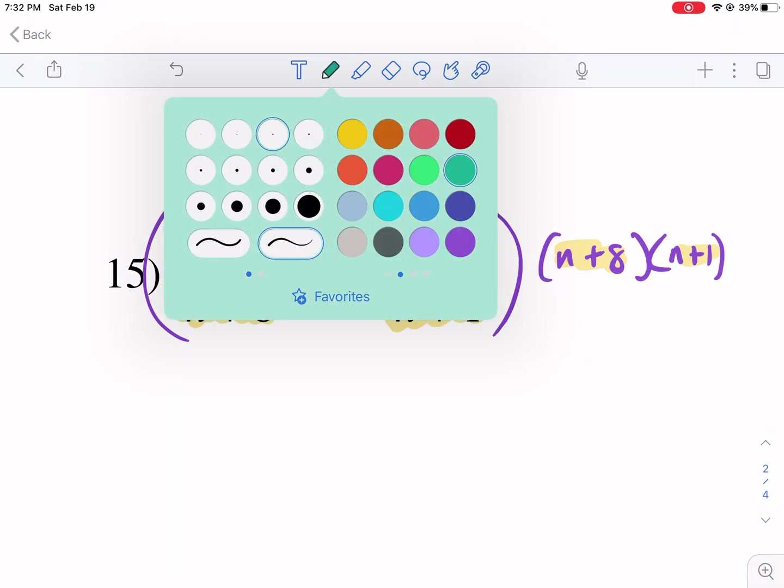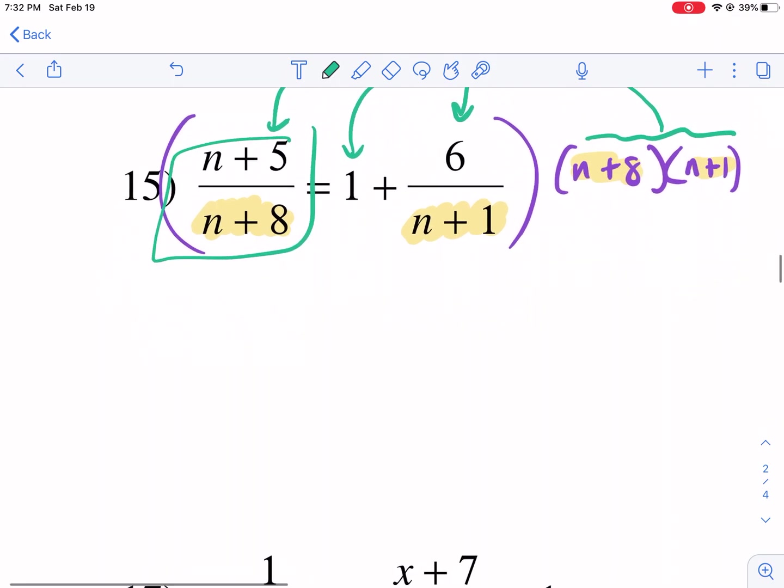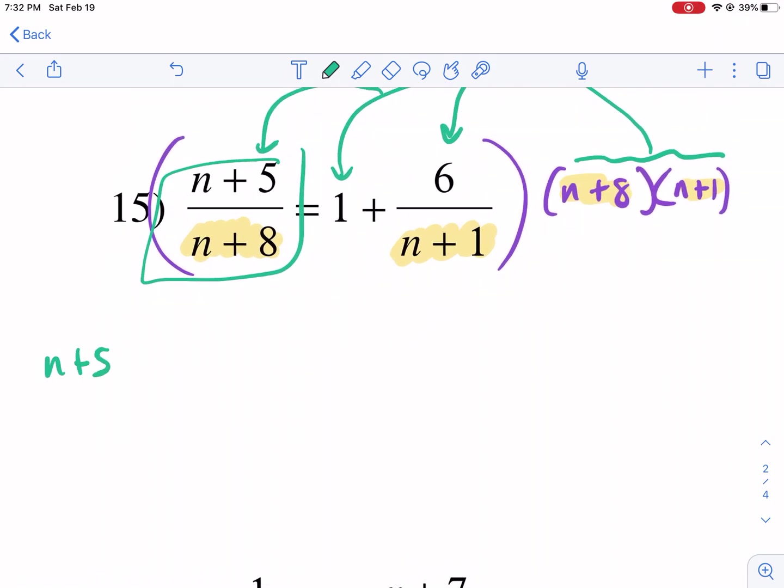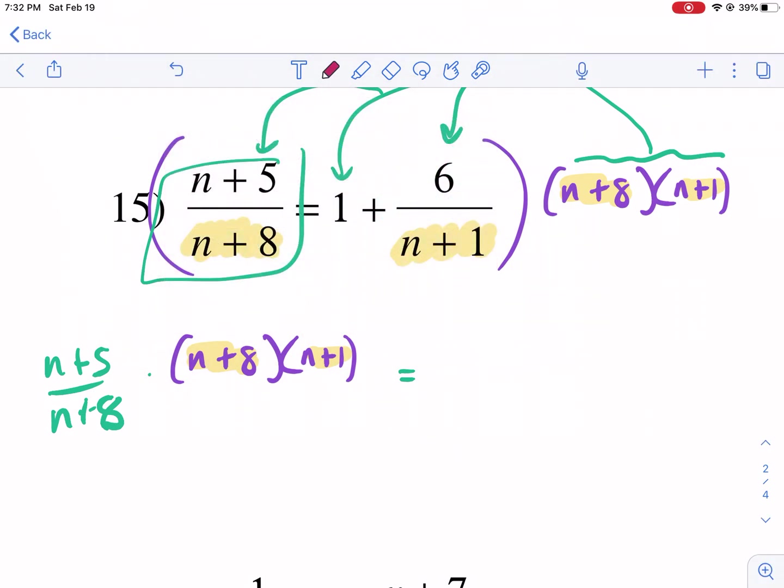The reason why we do this is it eliminates those denominators and makes it way easier to handle. Let me show you the multiplication with green. I'm going to multiply this whole thing to each term on both sides of the equal sign. As we multiply (n+5)/(n+8) by (n+8)(n+1), the n+8 crosses off because it's in the denominator and numerator. What's left is n+1 that's going to get multiplied in the top.